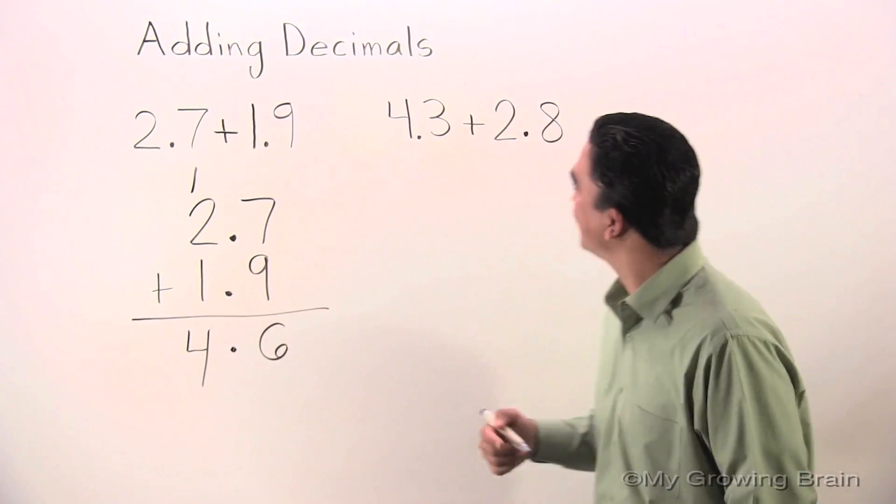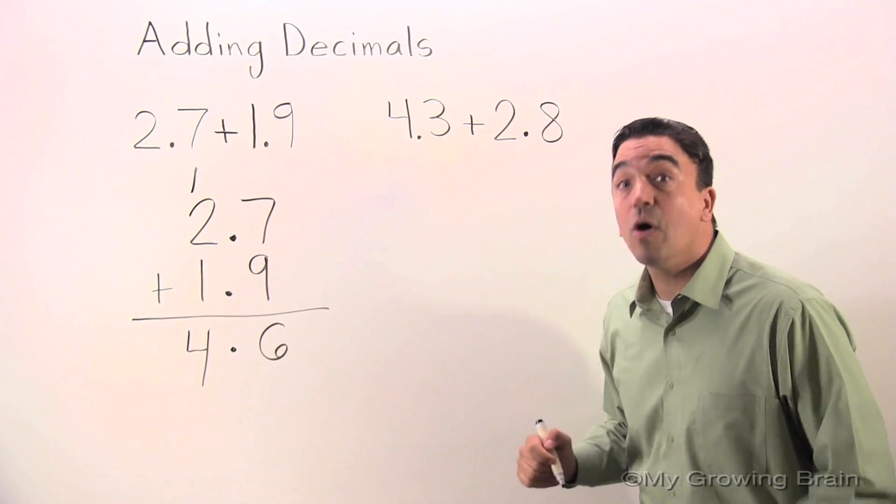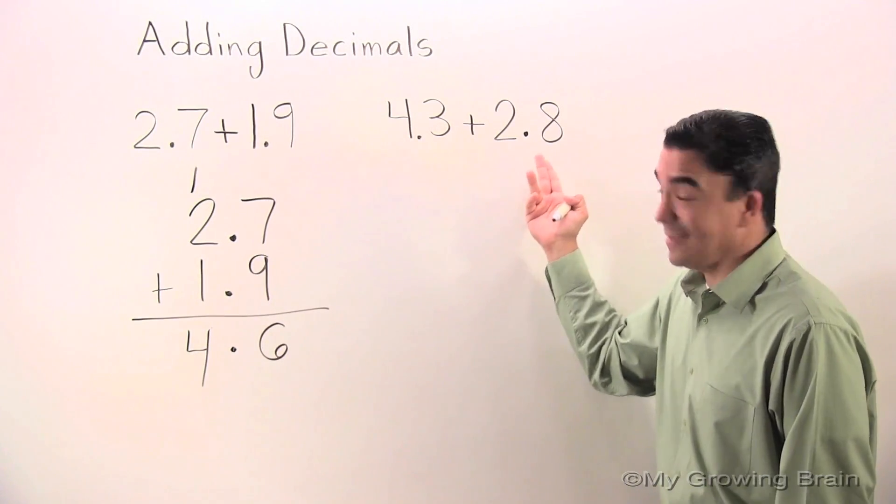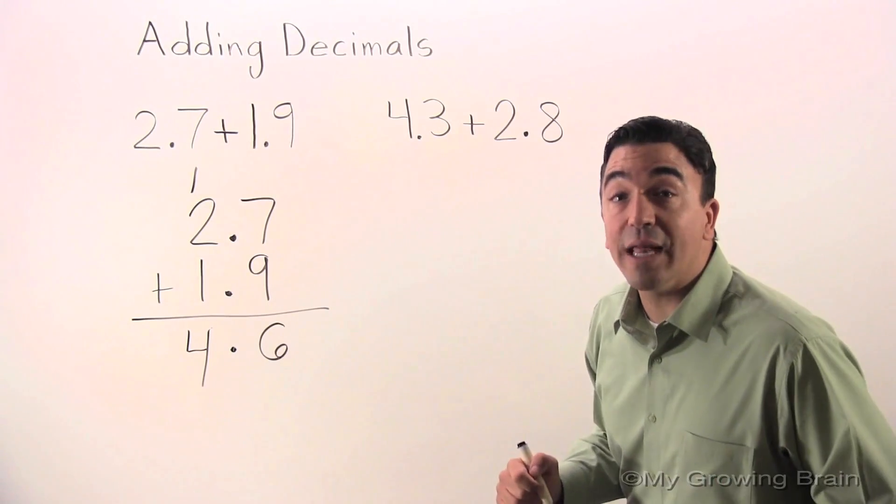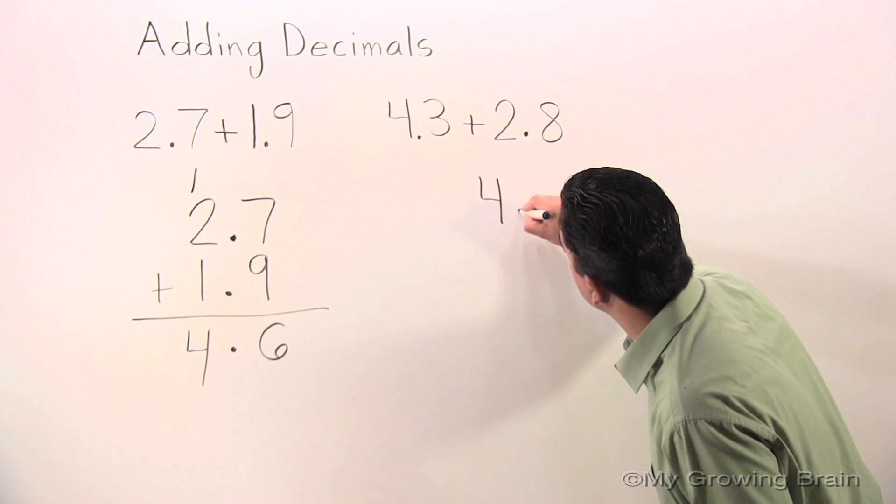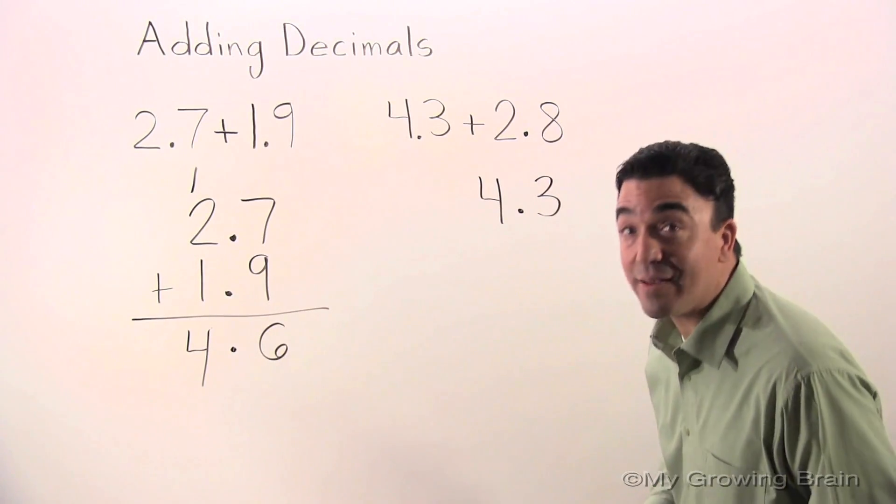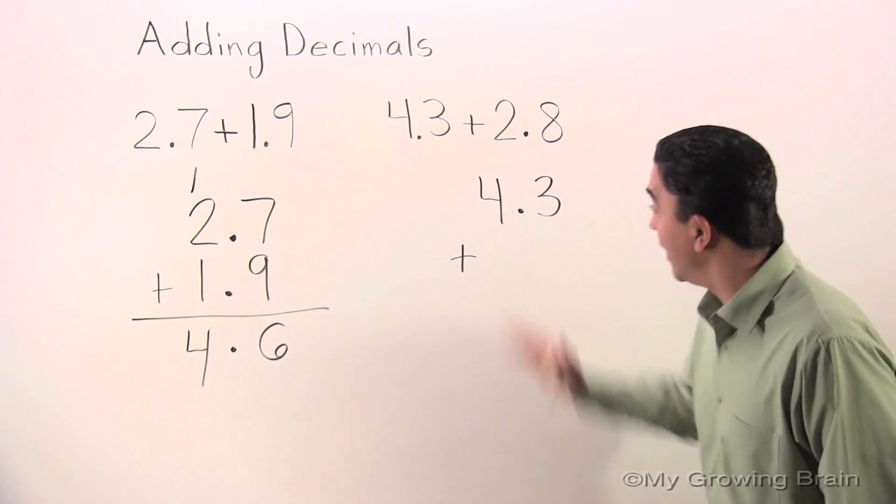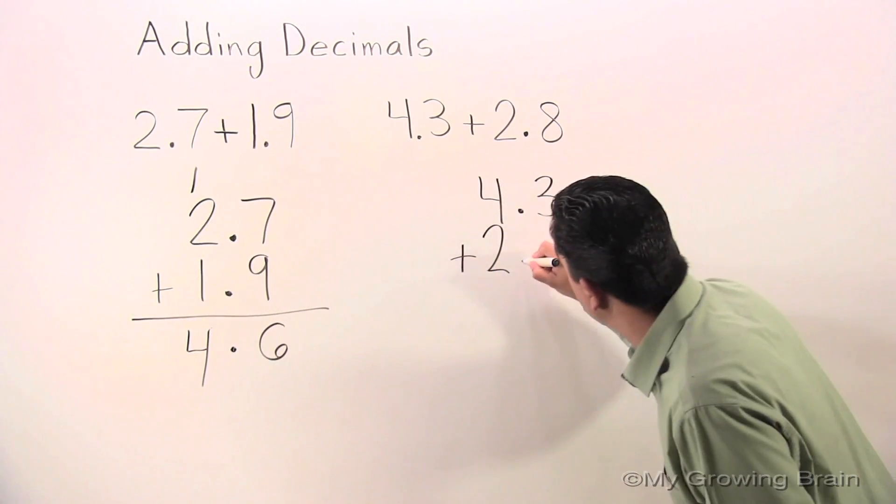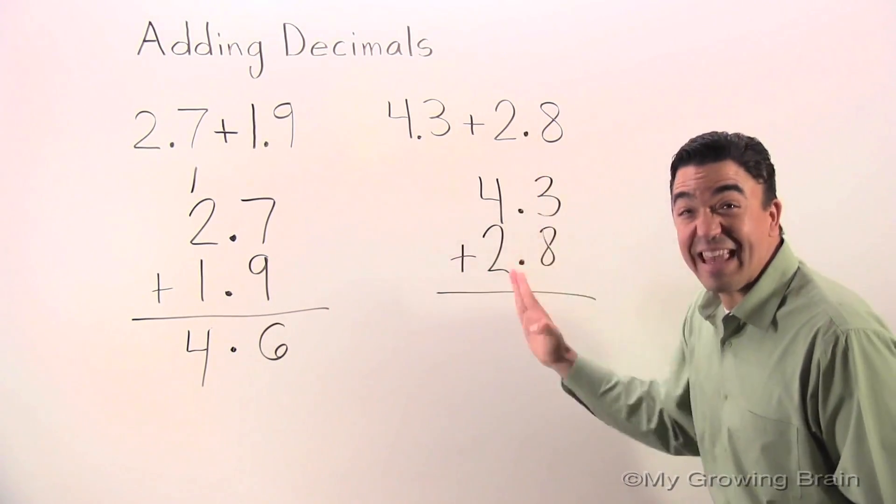Let's go to the next problem. 4.3 plus 2.8, or 4 and 3 tenths plus 2 and 8 tenths. Let's put it in a workable format. Let's line up the decimals. 4.3 plus 2.8. Line up the decimals. Let's go.